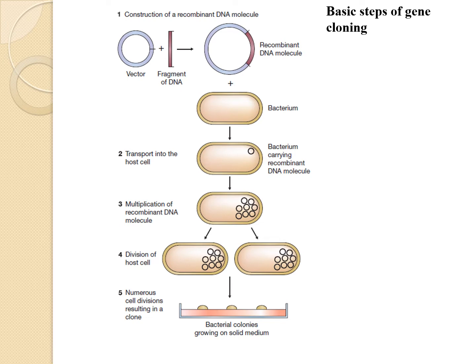Looking at the diagram, in step two the recombinant DNA molecule gets inside the bacterium. In step three, before cell division, the recombinant DNA molecule that gets inside the bacterium divides and we get a larger number of recombinant DNA molecules within a single bacterium. Then in step four, the entire bacterium divides into two.